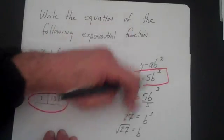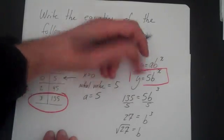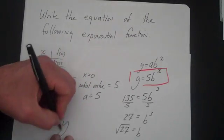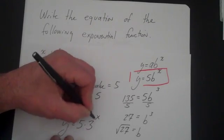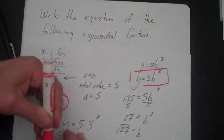Then I plug 3 back in to b, and I end up with my final answer. My final answer is y is equal to 5 times 3 raised to the x. So let's think about what we did here.